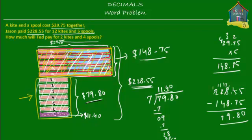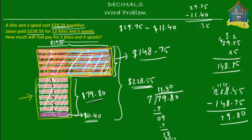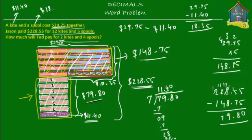Now we can find the cost of the spool. One kite and one spool together cost $29.75, and we now know the kite costs $11.40. So $29.75 minus $11.40: that gives 5, 3, 8, and 1 — so 1 spool costs $18.35.